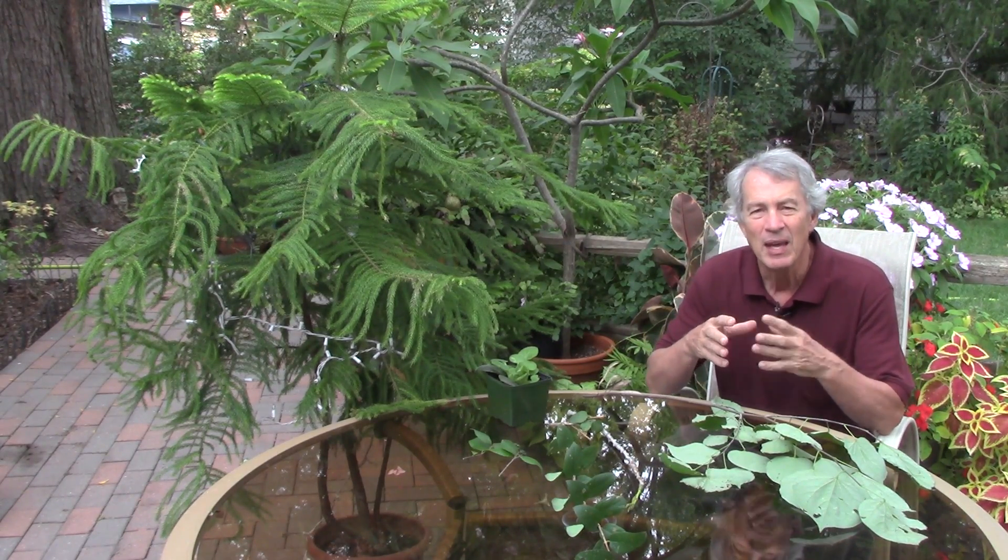Knowing the arrangement of buds and nodes will be a big help in plant identification, even without leaves, because the buds are still on those stems. The vascular tissue of a leaf will leave a scar on the stem when the leaf falls off. The shape of the leaf scar may also be useful in plant identification.